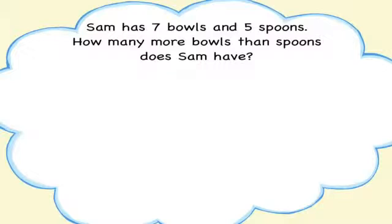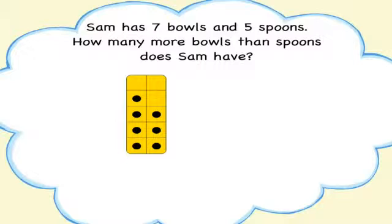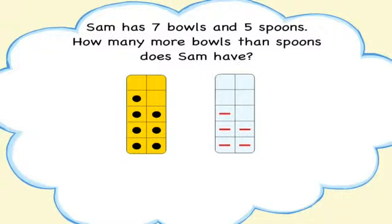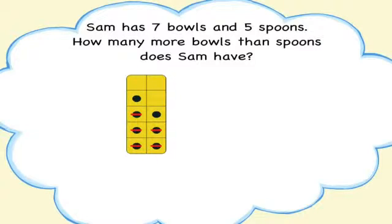Let's start by comparing one to one. Model the bowls with a dot tile. Model the spoons with a dash tile. To match one spoon to each bowl, slide the cards one on top of the other.